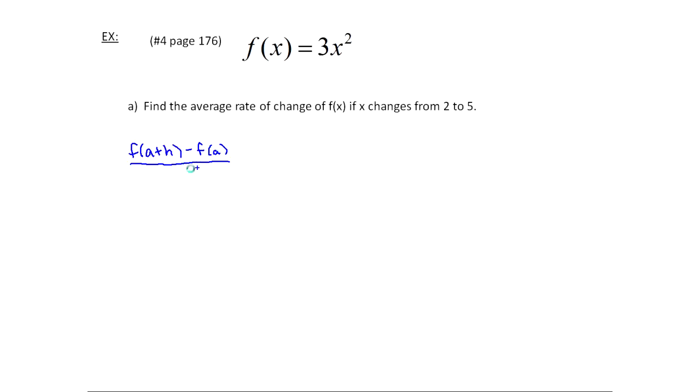And what's going on here is a is the point you start at and a plus h is the point you end at. So in this case, this is a and this is a plus h. So if you think about that, we went from 2 to 5, so that means the h is the difference between them and so h is 3. Now I just plug these values in and I'll get a number and it'll represent the average amount that f(x) changed when x changed by 3.